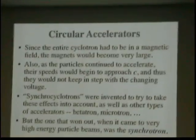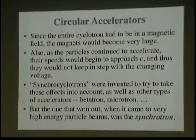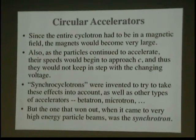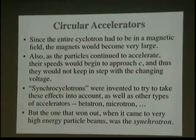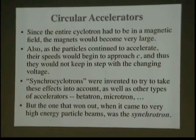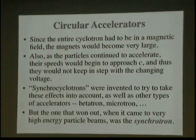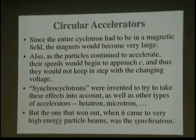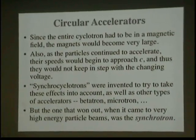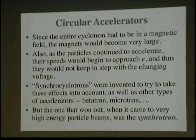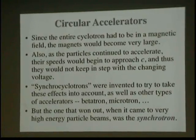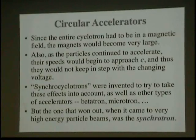We went from a 4.5-inch to a 60-inch cyclotron, but that was still a fairly modest energy. Since the entire cyclotron had to be in a magnetic field, the magnets became very large. As particles continued to accelerate, their speeds began to get relativistic — approaching the speed of light — and thus they couldn't keep in step with the changing voltage. Synchrocyclotrons were invented to account for these effects, along with other types like the betatron, invented by Donald Kearse at the University of Illinois, and the microtron. But ultimately, the best accelerator for high energy particle beams is called the synchrotron.